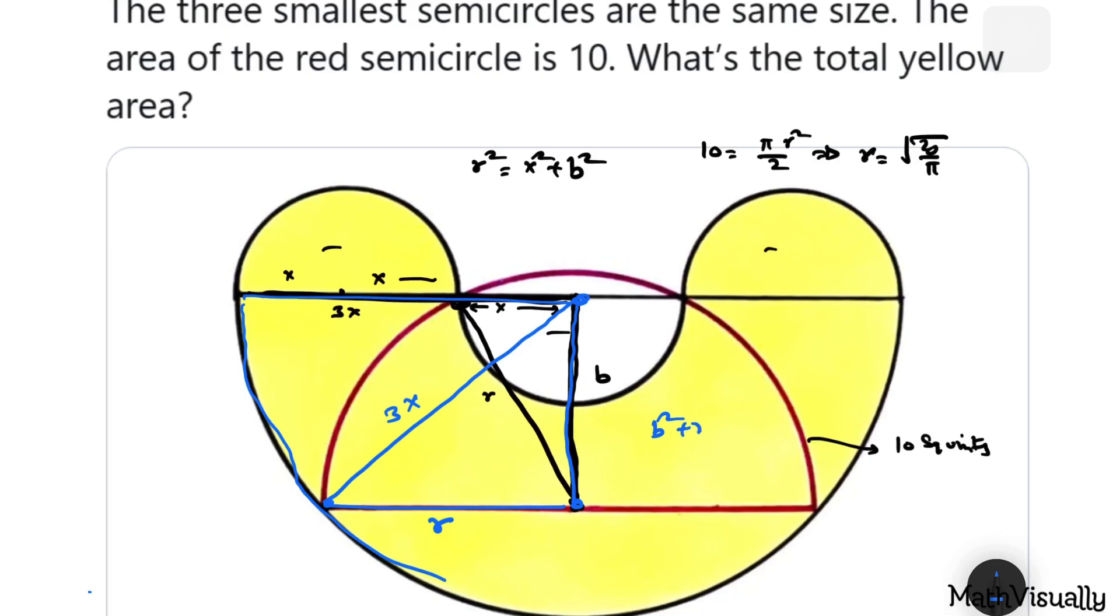We can see that this is nothing but 3x, which is the radius of the largest circle here. So another relation we are getting is b² + R² = 9x². With this simple trick, we can eliminate b² from equation 1 and equation 2. So let's substitute b² = R² - x² in equation number 2.